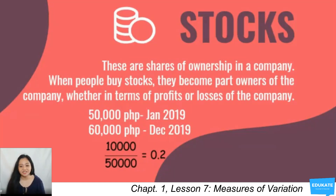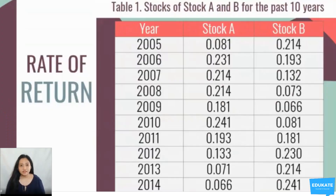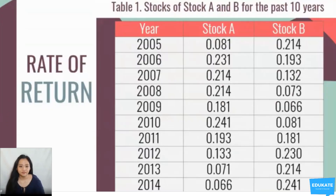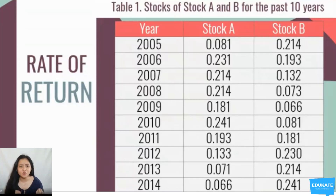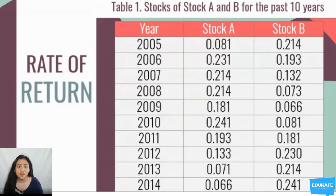The rate of return is 10,000 divided by 50,000, which is 0.2. Looking at the table showing rate of returns for Stock A and Stock B from years 2005 to 2014, where do you think it is wise to invest your money — Stock A or Stock B?